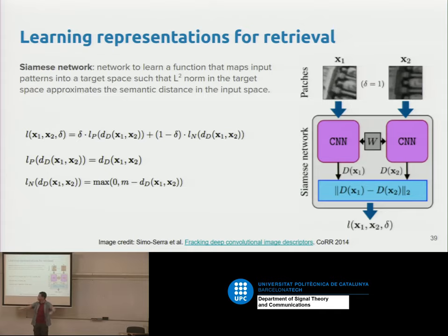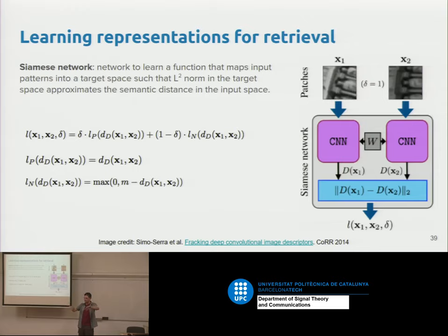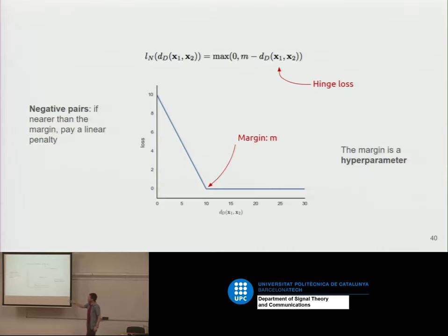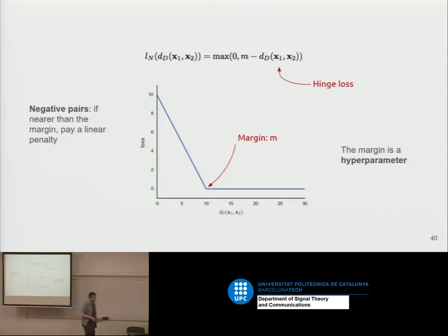Visually, when the distance is below the margin threshold the network starts repelling those negative pairs linearly. You can train with this to improve your features. One caveat: you need quite a lot of data. If you train on a small dataset, you'll overfit to that type of data and perform poorly on others.